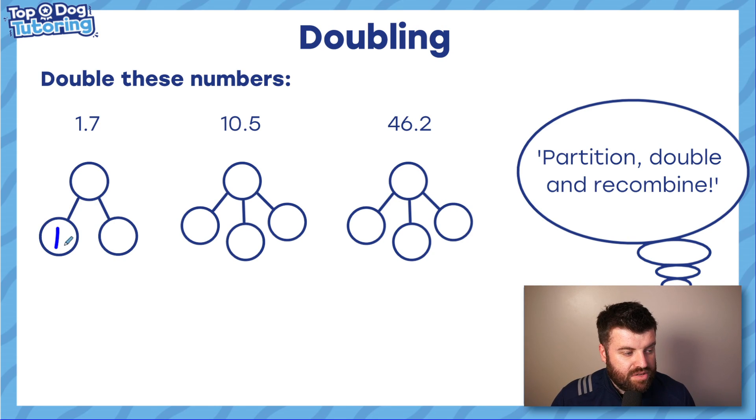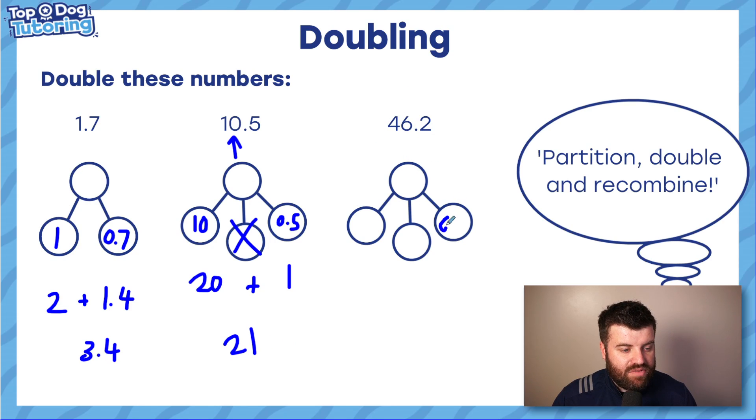So it's the same logic. 1.7 goes to 1 and 0.7. It's just about practicing that partitioning. We know double 1 is 2. Double 0.7, you're still going to use double 7 to help you. Double 7 is 14. So double 0.7 is 10 times smaller. It's going to be 1.4. 2 plus 1.4. 2 plus 1 is 3. And then the 0.4 is left over. The answer there is 3.4. Here, we split it up into three parts, but we don't need the middle one because there are no ones. So we can take the 10 here. We can take the 0.5 there. Double them both. We get 20 and we get 1. Add them up. We get 21.